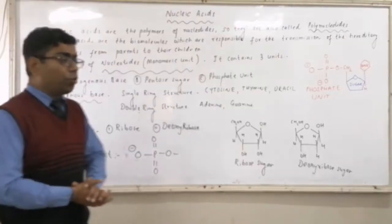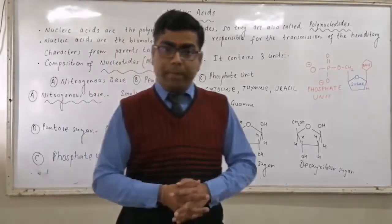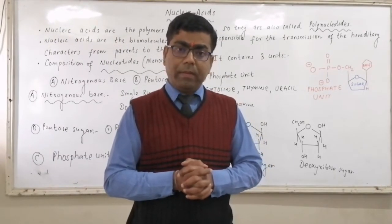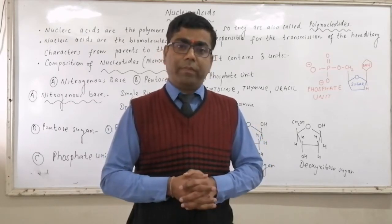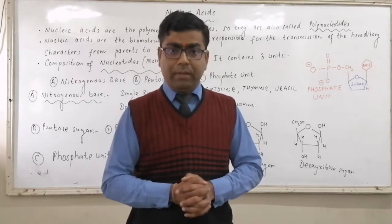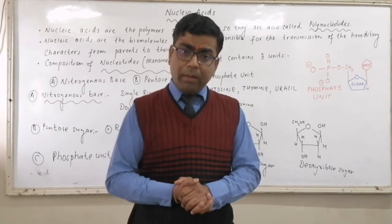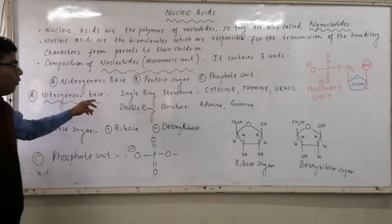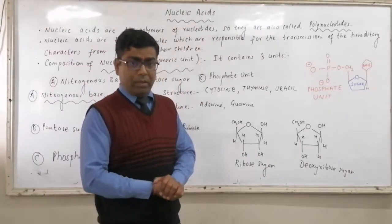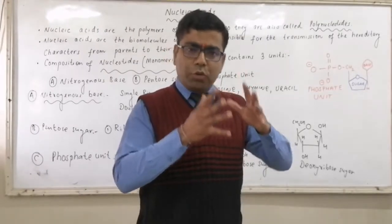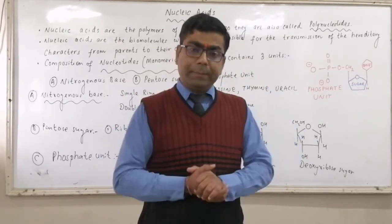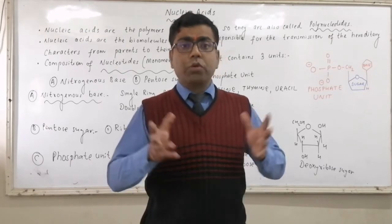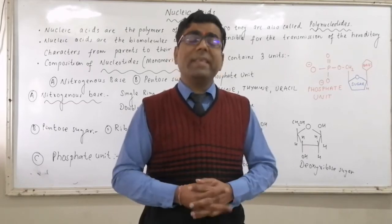Now, the monomeric units present in polynucleotides are nucleotides. Nucleotides themselves are complex molecules because each nucleotide consists of three units: one is a nitrogenous base, second is a pentose sugar, and third is a phosphate unit. When a nitrogenous base combines with a pentose sugar and a phosphate unit, we obtain a nucleotide.